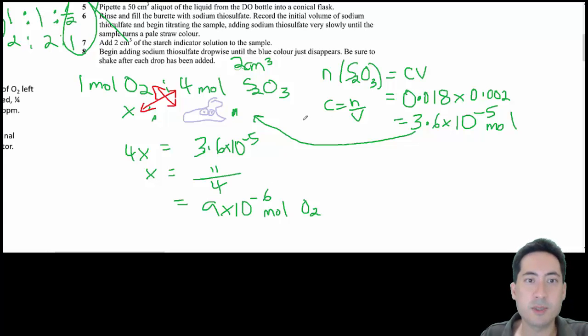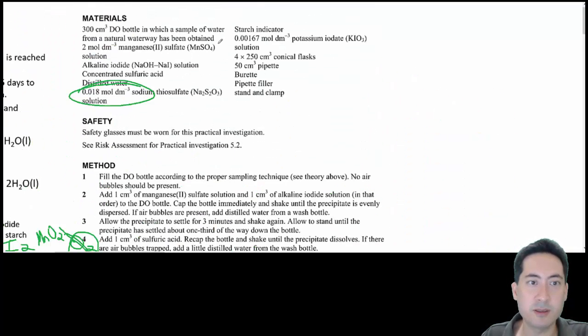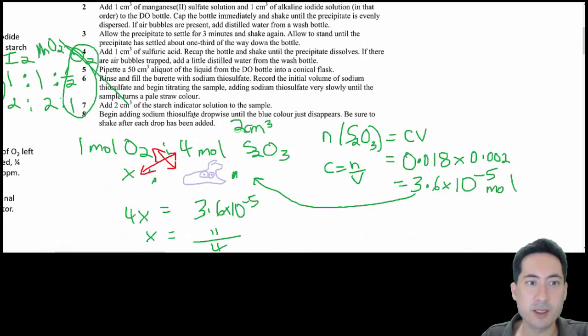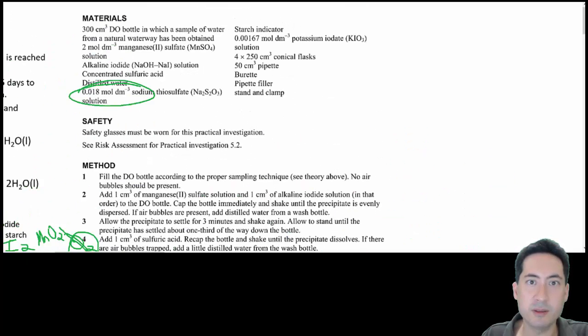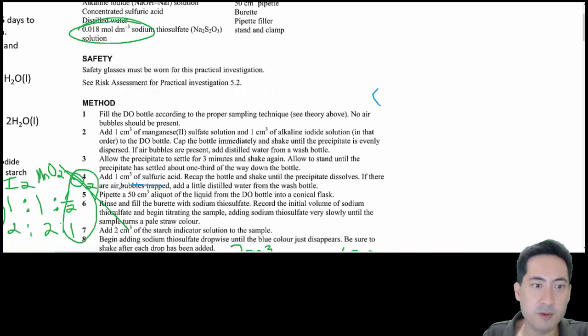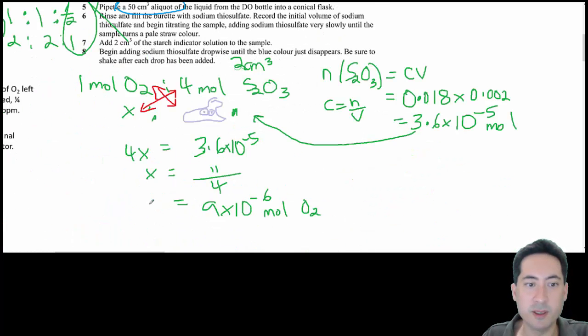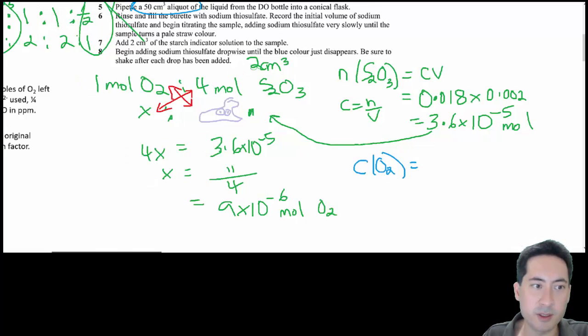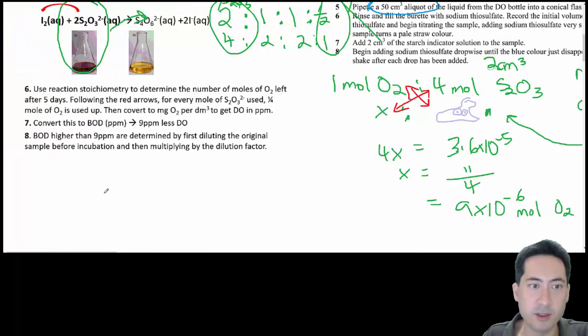Now this is actually much simpler, because we don't have to work out the total volume or anything. We've taken a sample of 50 mils. We've already got the concentration of the whole thing. We've just taken a sample of 50 mils, so that's fine. We can just work out the concentration of O2, and then convert it to our parts per million to get our final answer.